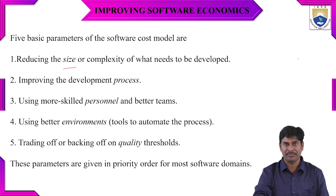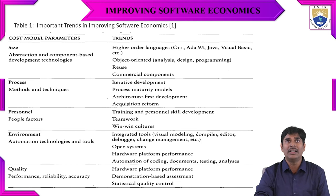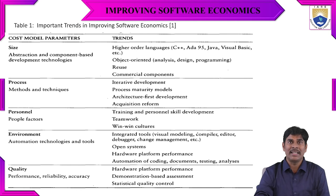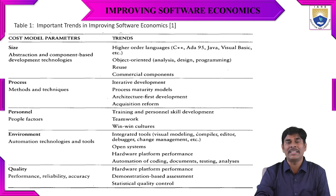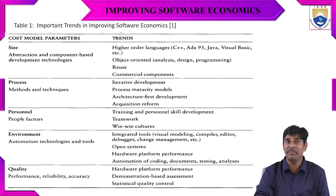For improving software economics, we have trends across five parameters. The first is size, where we consider cost model parameters such as abstraction and component-based development technologies. We look at which languages to implement — higher-order languages such as C++, Ada 95, Java, Visual Basic, and Ada 83. Comparing C and C++, higher-order languages are mainly useful to minimize or reduce the size of the software.